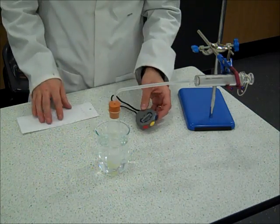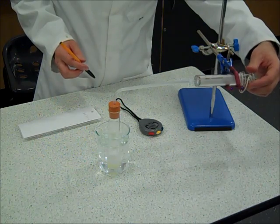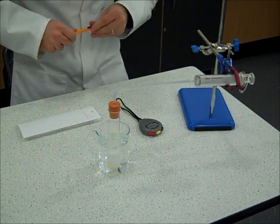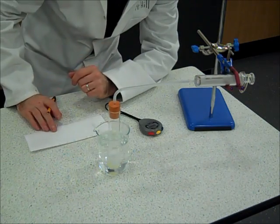I'm going to start a stopwatch and record the amount of oxygen that's produced every 10 seconds. You can see there the gas syringe has started to move and you might be able to see some bubbles of oxygen being produced within the tube.